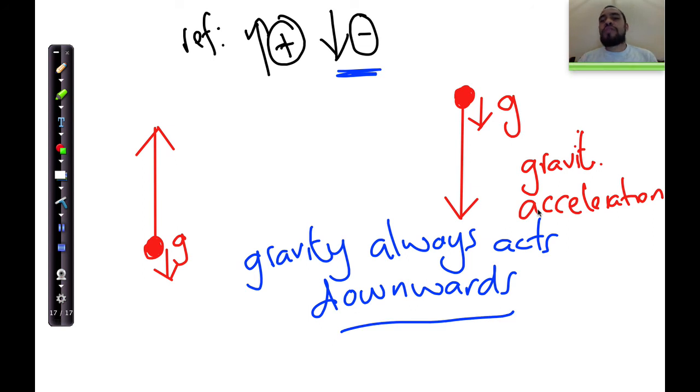You choose the reference system according to either what the question states, or what you state at the beginning of the question. For example, we will take upward as positive, downward as negative. A quick recap of this slide. As an object moves upwards, gravity is pulling that object downwards, and that's the reason the object starts to slow down. Whilst an object is in free fall downward, gravity also acts on the object, causing that object to speed up.